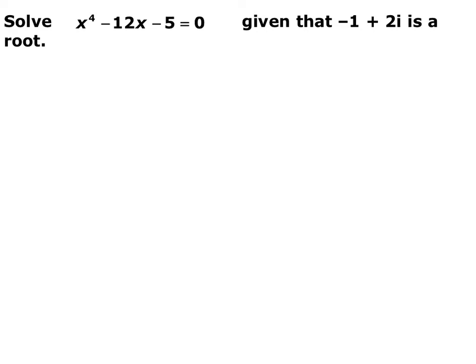Now we're given a quartic function — degree four — and one root: negative 1 plus 2i, and we want to find all possible roots. A degree four polynomial has exactly four roots. We know negative 1 plus 2i is a root, which means its conjugate negative 1 minus 2i also has to be a root. So we have two of the four roots. We're going to use polynomial division: find the quadratic from these two roots, then divide it into the original polynomial to find the other two.